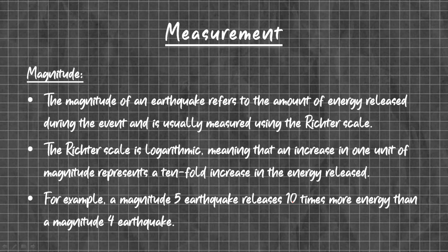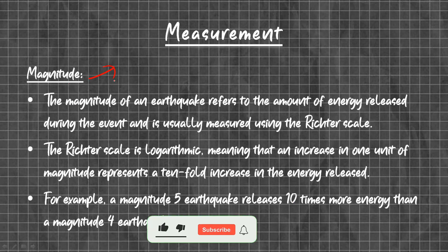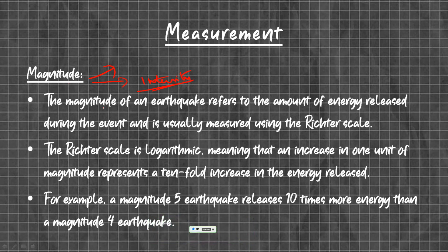How do we measure earthquakes? The measurement of an earthquake is done in two types: one depends on magnitude and the other depends on intensity. The magnitude of an earthquake refers to the amount of energy released during the event. It is usually measured on the Richter scale, which is logarithmic, meaning that an increase of one unit of magnitude represents a tenfold increase in energy released.